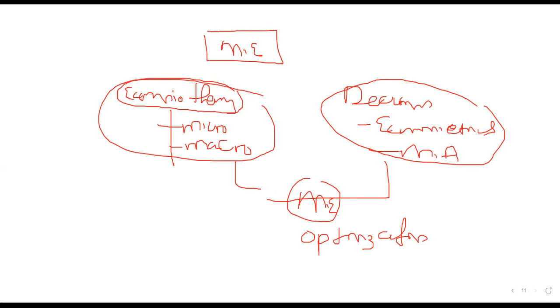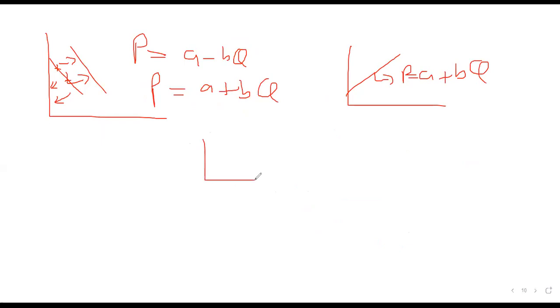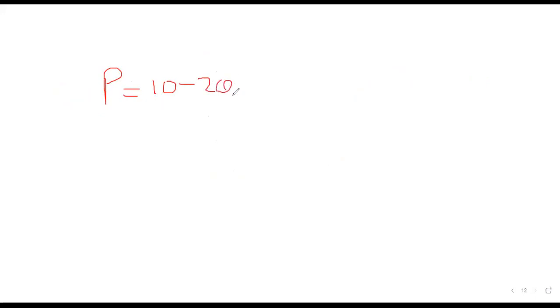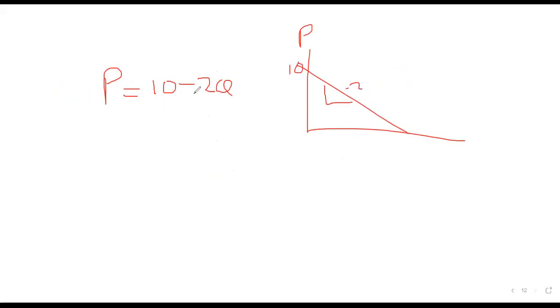In the demand equation P = A − BQ, the B stands for the slope or gradient, and A stands for the y-intercept — where it cuts the P-axis. An intercept is simply a cutting point. So if our demand equation is P = 10 − 2Q, it will cut the P-axis at 10, and the slope is negative 2.